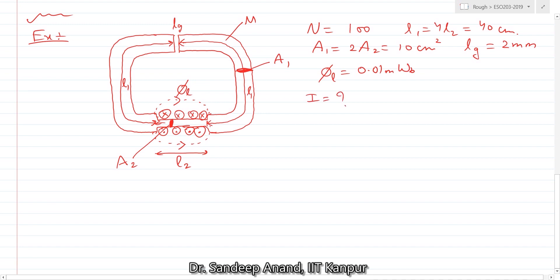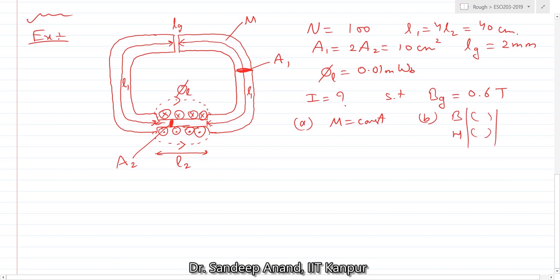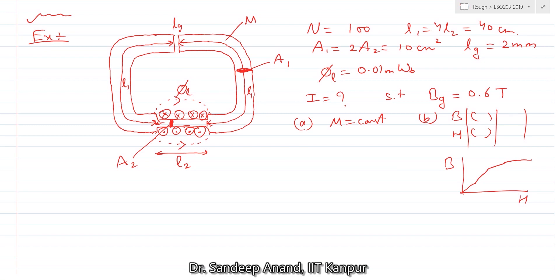Find the current I such that the air gap flux density is 0.6 Tesla. We break this into two parts: Part A assumes mu is constant, and Part B does not assume mu is constant. For Part B, a table of B and H values is given — essentially a piecewise linear B-H curve. Part A uses constant mu; Part B uses the full B-H graph.